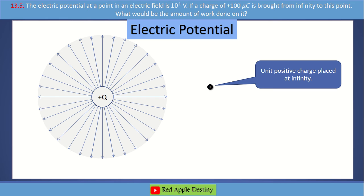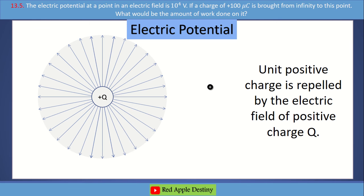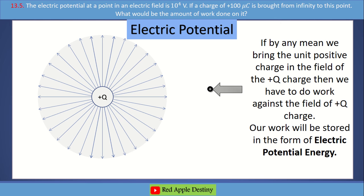Let's say we have a unit positive charge which is at infinite distance — far from the plus Q charge. The unit positive charge will be repelled by the plus Q charge field. If we want to bring the unit positive charge into the plus Q electric field, we will do work against the electric field, stored as electric potential energy.